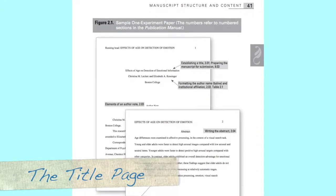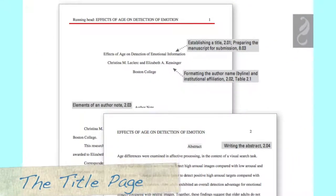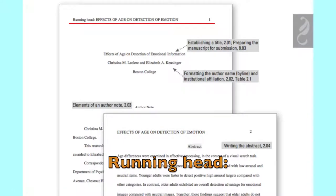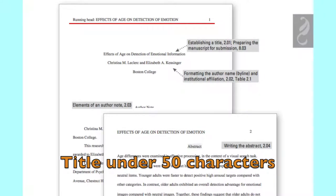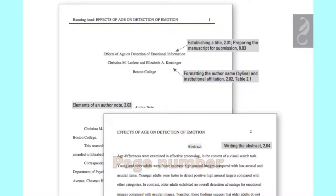Step one is going to be formatting your running head. Make sure that R is capitalized on running and H is lowercase, and then the title of your paper is going to be in all caps. Make sure that the title is shortened. It should not exceed 50 characters in length. Last but not least, your page number should be flush with the right margin.